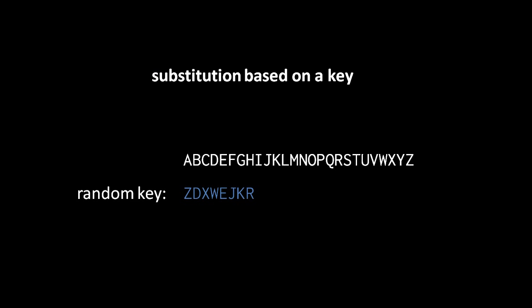A really simple way of doing substitution based upon a key is to line up our secret random key with the start of the alphabet, such that here, when our key is ZDXWEJKR. And note for simplicity here, we're just dealing with capital letters, so ignore lowercase letters for now. Here, A gets substituted with Z, B with D, C with X, D with W, and so forth until H with R.